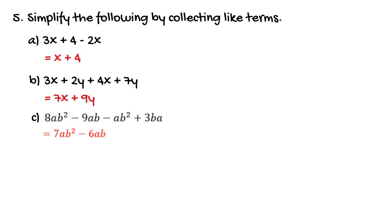It's really important to note here that the operation in front of a term belongs with that term. So that 9ab because it's got a negative in front of it or it's actually a subtraction symbol but because that's in front of it we use that as negative 9ab. So always make sure that you include the operation with the term that comes after it.